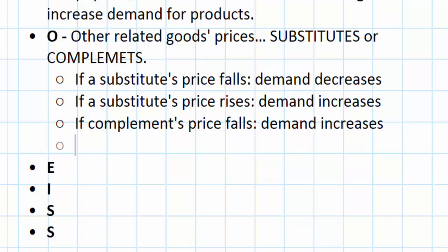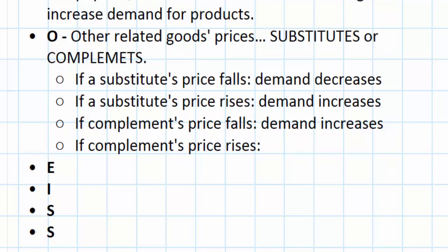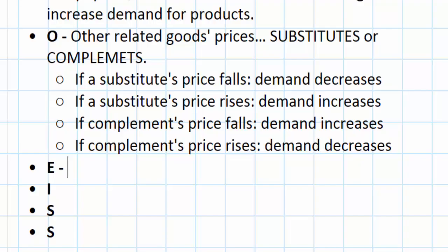If a complement gets more expensive, what happens to demand for the good in question? If hot dogs get more expensive, you're going to consume fewer hot dogs — that's the law of demand — but you'll also demand less hot dog buns even if the price of hot dog buns doesn't change. So demand decreases. It's very important to understand that if a substitute's price falls, demand decreases, but if a complement's price falls, demand increases, and vice versa.